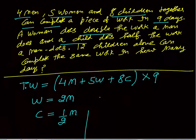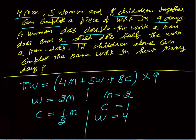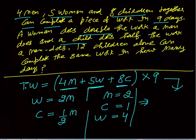We will assume man one day work as two units, so that c is not a fraction: m equals two, c equals one, and w equals four. Putting values: four m equals eight, five w equals twenty, eight c equals eight. Total one day work is eight plus twenty plus eight equals thirty-six. In nine days, total work equals thirty-six into nine units.